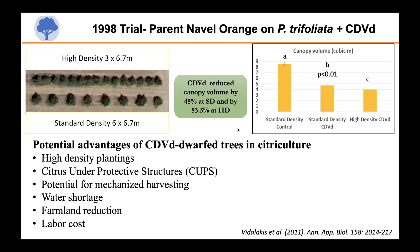When I joined the group, I immediately saw the potential applications and advantages of using citrus dwarfine viroid. High-density plantings have the potential to be used under protective structures, and there is potential for mechanized harvesting. We should also consider the challenges that modern citrus culture is facing, including water shortages, farmland reduction, and increasing labor costs — all factors exacerbated by HLB, but which could be alleviated by the implementation of dwarfed trees.